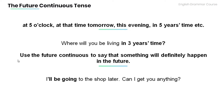Note that we also use the future continuous to say that something will definitely happen in the future. Have a look at the example below: I'll be going to the shop later. Can I get you anything? Note that the future continuous tense is used in this sentence because I will definitely go shopping later.